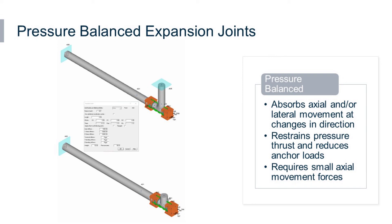It's often used to relieve loads on equipment such as pumps, compressors, and turbines. For the expansion joint to function properly, it's important to understand that the pressure thrust restrained by the tie rods has to exceed the axial movement forces.